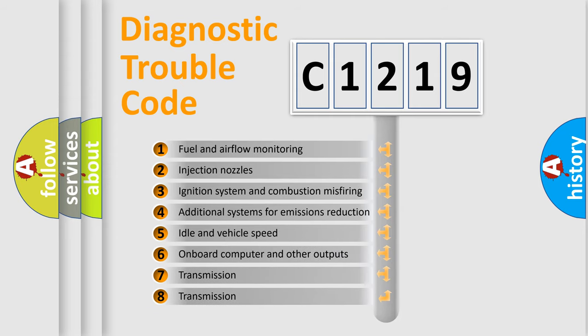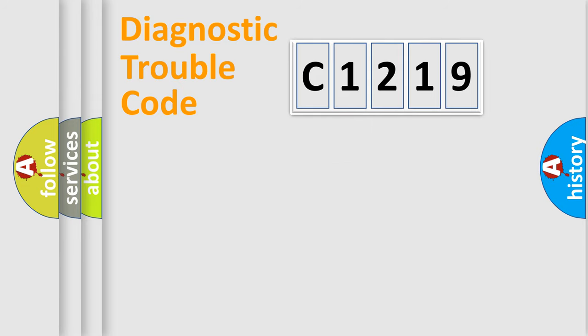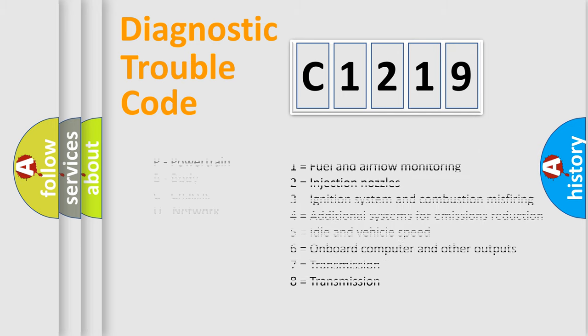The third character specifies a subset of errors. The distribution shown is valid only for the standardized DTC code. Only the last two characters define the specific fault of the group.